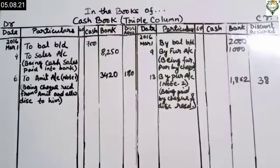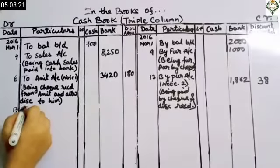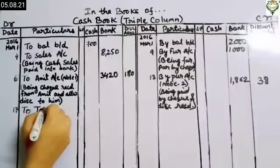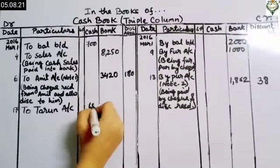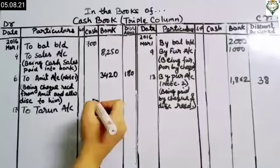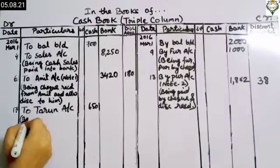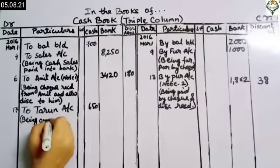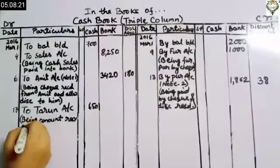On 17th March, received from Tarun on account. Since money is coming into the business, we record on the debit side: 'To Tarun Account' with ₹650 in the cash column, as Tarun is paying cash. Narration: 'being amount received on account'.